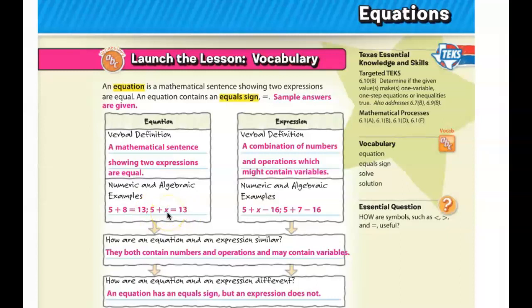But this is also true that 5 plus X is equal to 13. In this case, X would be equal to 8. Now, an expression is a combination of numbers and operations which also might include variables, but they don't include an equal sign. So an example of an expression could be 5 plus X minus 16, or 5 plus 7 minus 16.